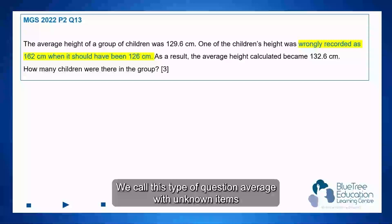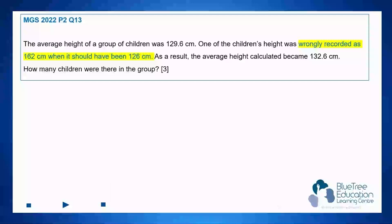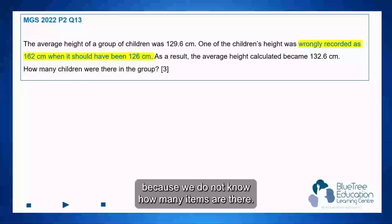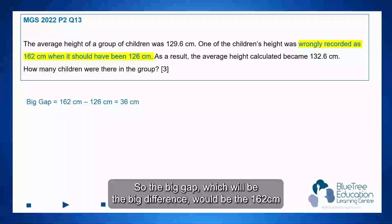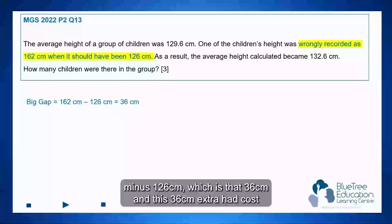We call this type of question 'average with unknown items' because we do not know how many items there are. So the big gap — the big difference — would be 162 cm minus 126 cm, which is 36 cm.